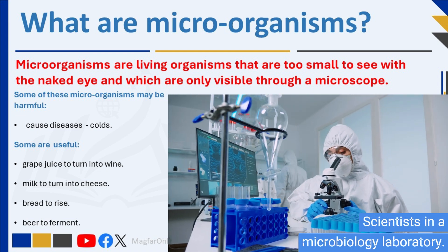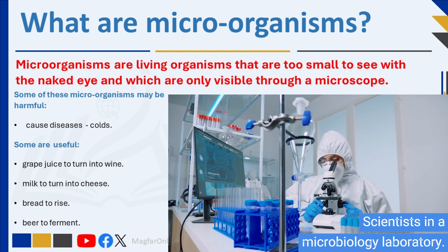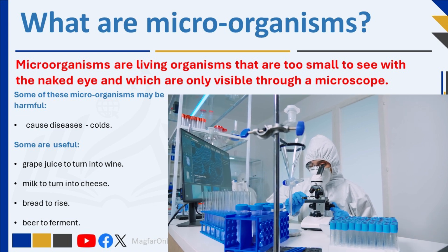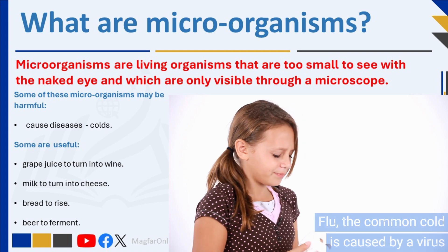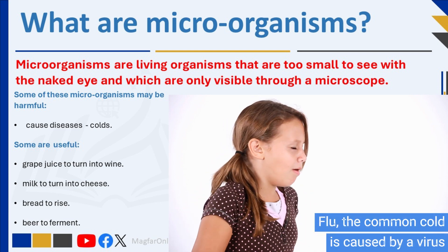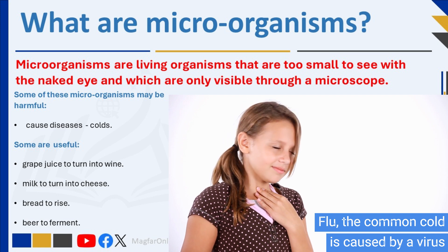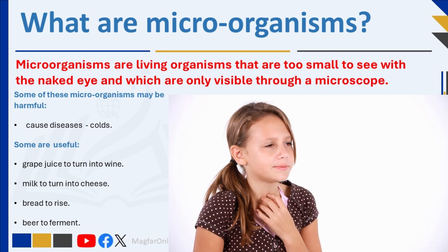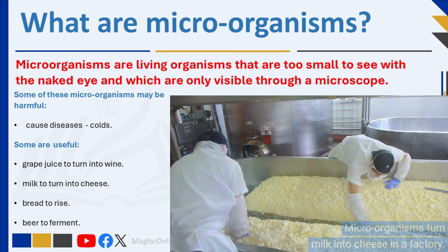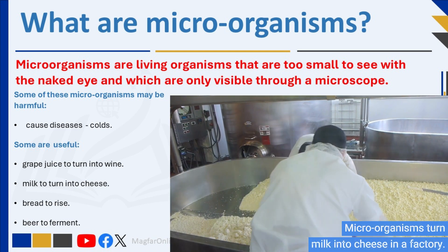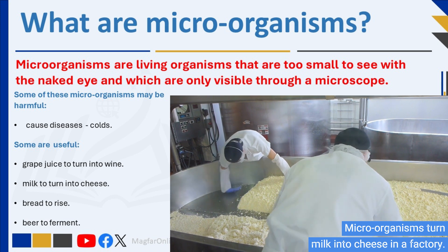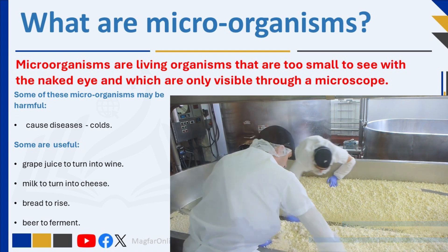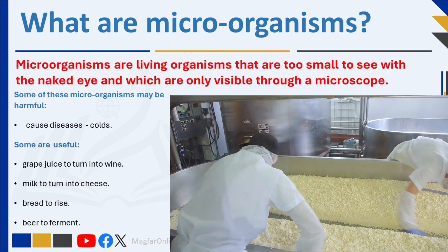Before microscopes were invented in the mid to late 1600s, people had no idea that microorganisms existed. They did not know that microorganisms caused grape juice to turn into wine, milk to turn into cheese, bread to rise, or beer to ferment — nor that some diseases such as colds were caused by microorganisms. The invention of the first microscope allowed biologists to observe objects and organisms that no one had ever seen before.